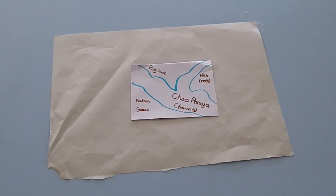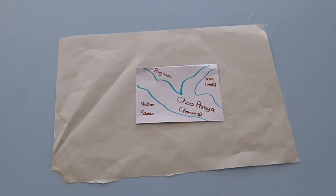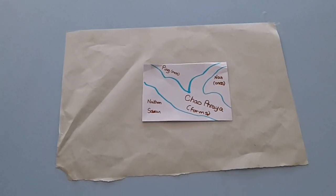The Ping and the Nan River end in Nakan Sawan and the Chao Praya forms.